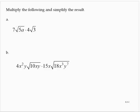Multiply the following and simplify the result. 7 times the square root of 5a times 4 times the square root of 3.